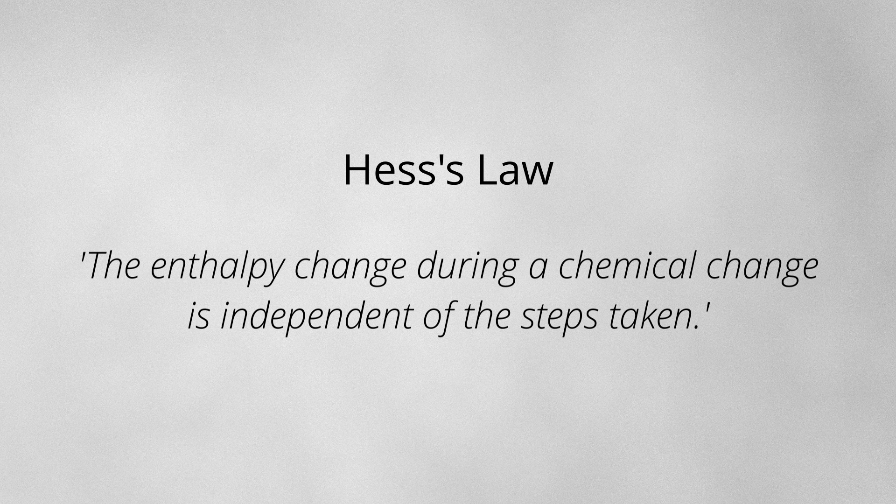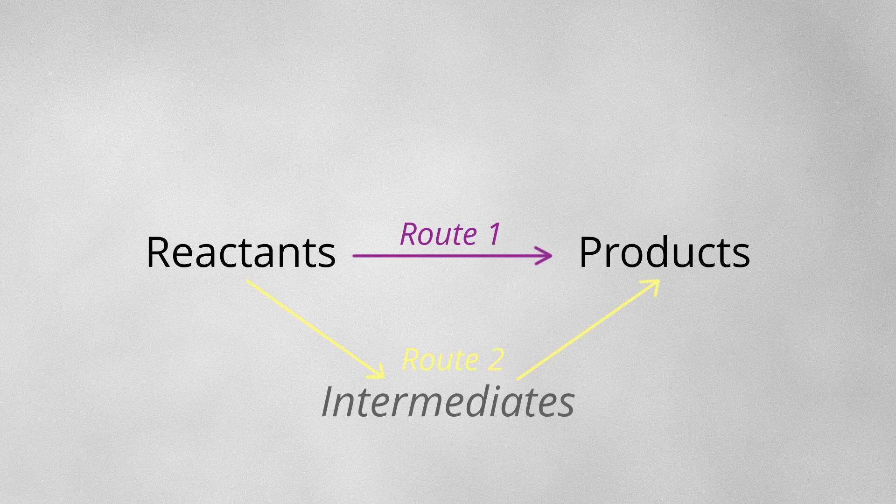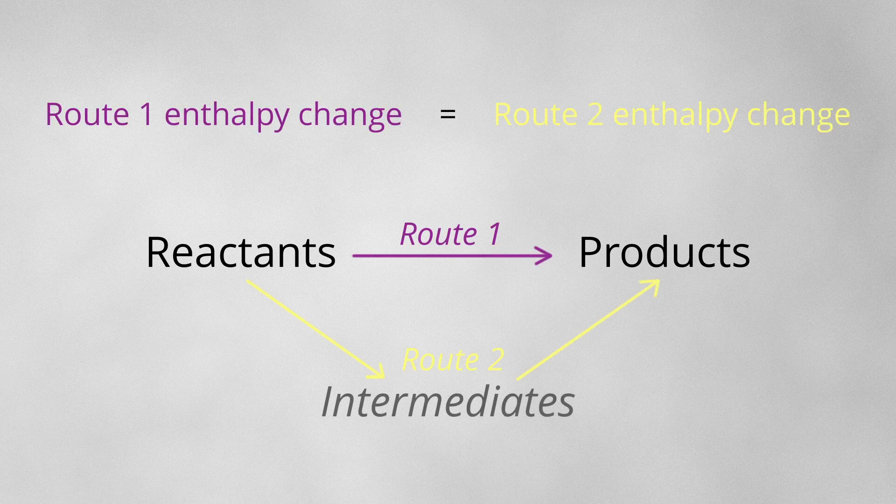Now that we know what an enthalpy change is, we can take a look at Hess' law. Hess' law states that the enthalpy change during a chemical change is independent of the steps taken. In other words, as long as you start at the same reactants and end at the same products, it makes no difference how you get there and what intermediates you go by — the overall enthalpy change will be the same.